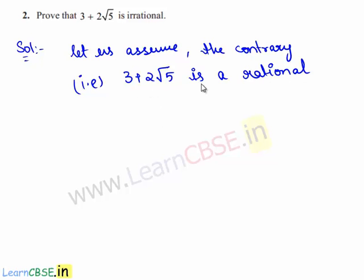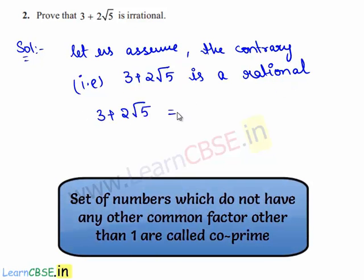Since we have assumed that 3 plus 2 root 5 is a rational, it can be written as p upon q, where p and q are integers and also co-primes.